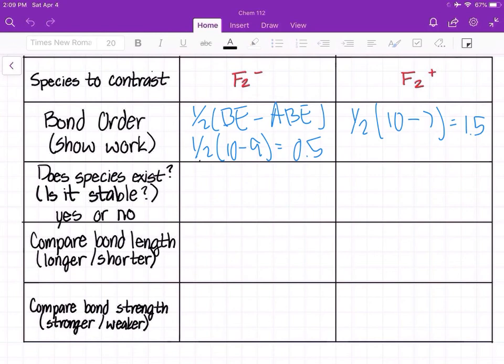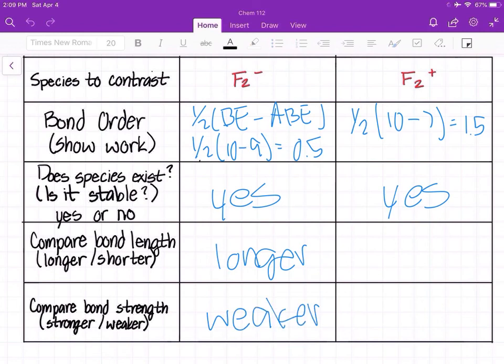So does this species exist? F2 minus does because the bond order isn't zero. Same thing with F2 plus because it's not zero as well. Now the bond length of F2 minus would be longer and weaker because of how low the bond order is. And F2 plus would be the shorter one and the stronger one because it has a higher bond order.